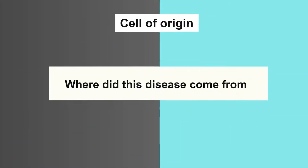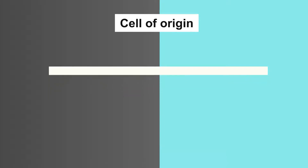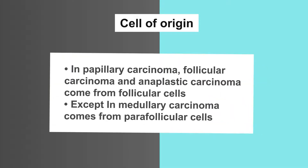Feature number six is cell of origin, which means where did this disease come from. Papillary carcinoma, follicular carcinoma, and anaplastic carcinoma come from follicular cells. Medullary carcinoma comes from parafollicular cells.